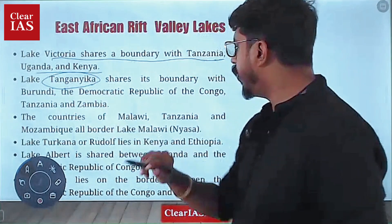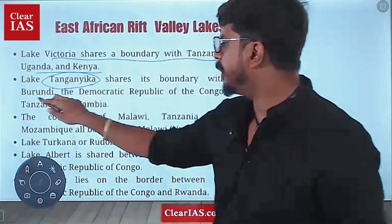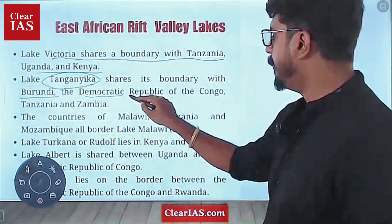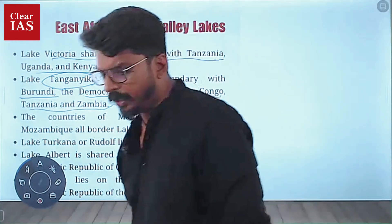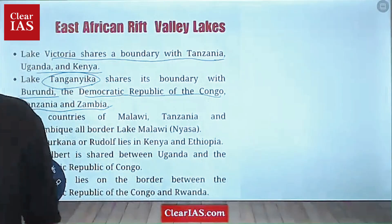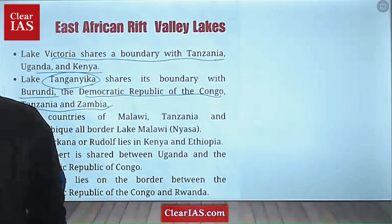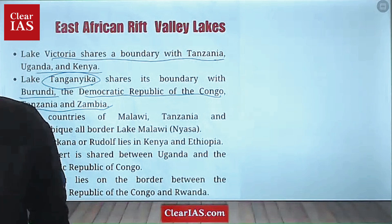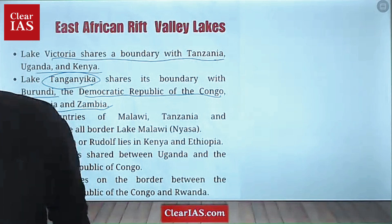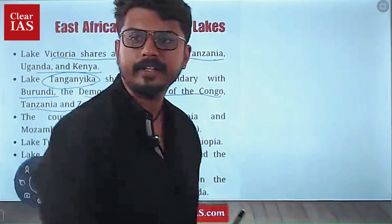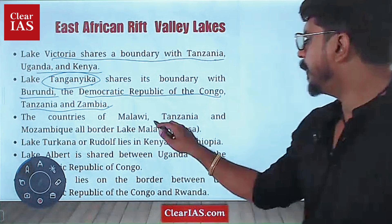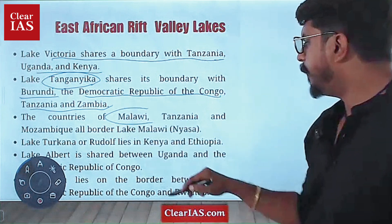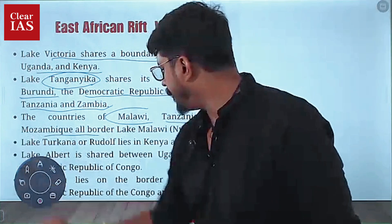Next is Lake Tanganyika, a longer lake. It shares its boundary with Burundi, Democratic Republic of Congo, Tanzania, and Zambia. And next we mark Lake Malawi — the countries of Malawi, Tanzania, and Mozambique.